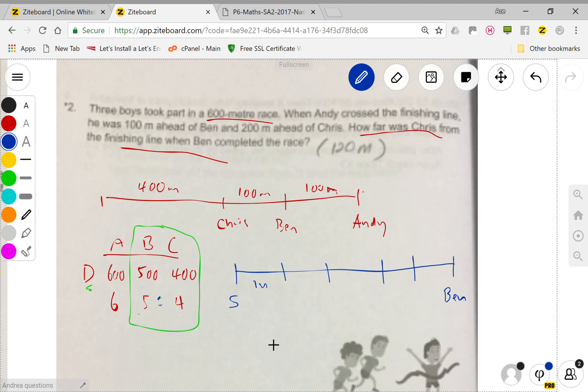Here is 1 unit, 1 unit, 1 unit, 1 unit, 1 unit - five units total. Ben completed 5 units, so where is C on the diagram?